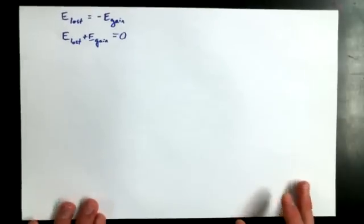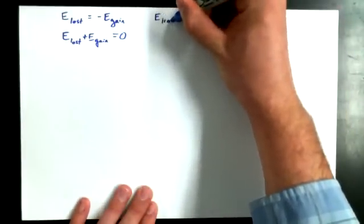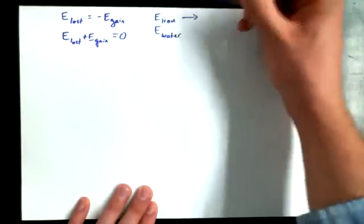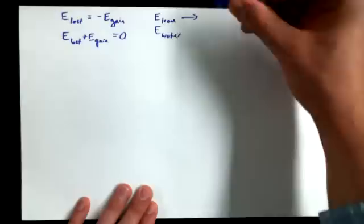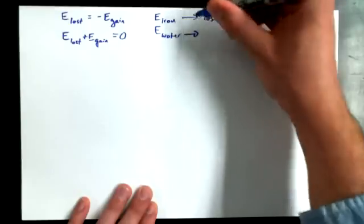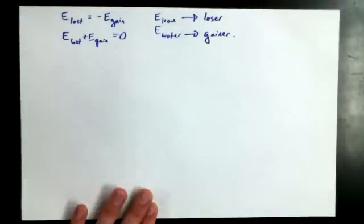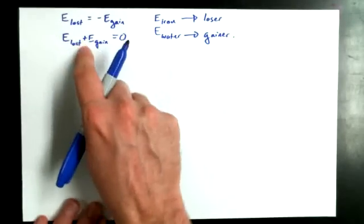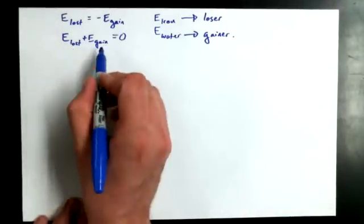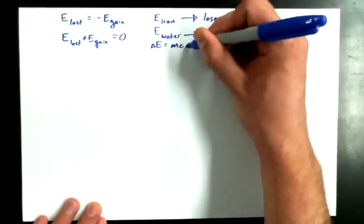Alright, instead of saying E lost and E gained, I want to talk about our iron and our water and their energies. And we know that if we put iron into water, as we said previously in our diagram, that iron is going to be the loser of energy if it's hot, and the cold water is going to be the gainer of energy. And so I want to build this idea into this equation.